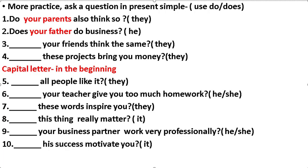Number two: your father do business. Your father — he. When we have he, she, it, we use 'does'. Does your father do business? Number three: your friends think the same. Your friends — they. When we have 'they', we use 'do'. Do your friends think the same?